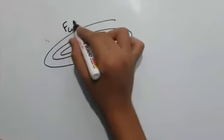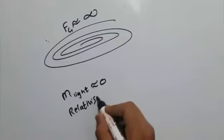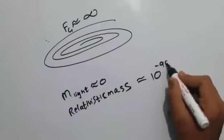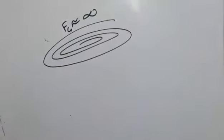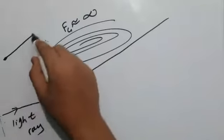Now let us consider an experiment of a black hole where force of gravity of black hole is approximately equals to infinity and the mass of light is approximately equal to zero. And relativistic mass is like in order of 10 power minus 90, but that's actually not the point. But now let us consider a ray of light is going towards black hole, it bends like this.